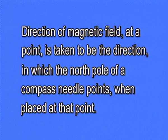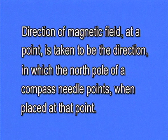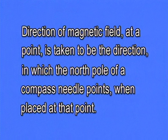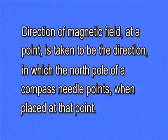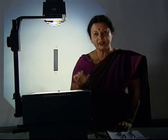Magnetic field is a vector quantity which has both magnitude and direction. How do we find the direction of the magnetic field? The direction of magnetic field at a point is taken to be the direction in which the north pole of a compass needle points when placed at that point. Let us try and find the direction of magnetic field lines of this magnet using compass needles.